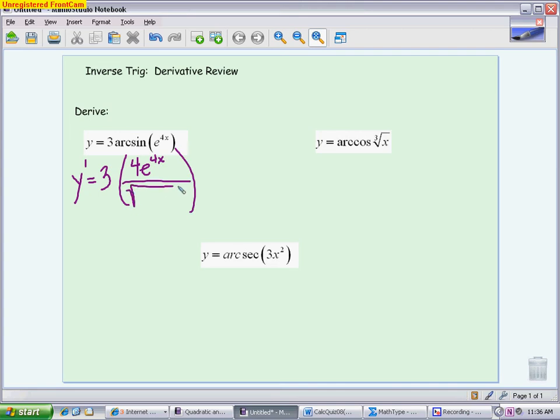it is the square root of 1 minus u squared. So you have to correctly square e to the 4x. When I square e to the 4x, I get e to the 8x. You can either leave your answer like this, or multiply the 3 on top to give you 12e to the 4x over the square root of 1 minus e to the 8x.